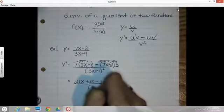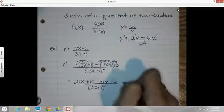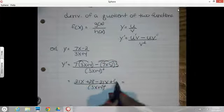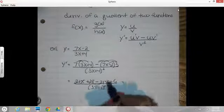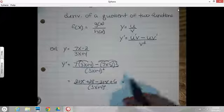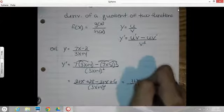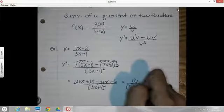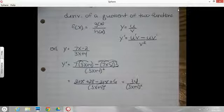All over 3x plus 4 squared, and just combining like terms in the top, the x cancel it out, and I've got 28 plus 6 of 34 over the quantity 3x plus 4 squared. There, quotient rule.